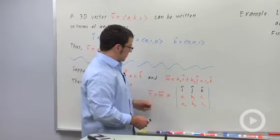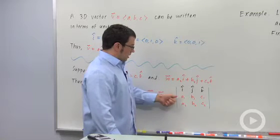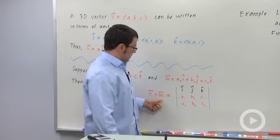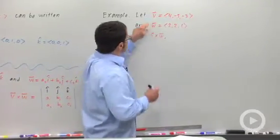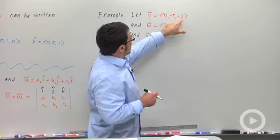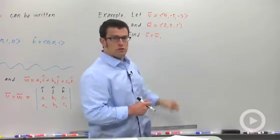So that's really important, the order that you put these two. The first one in the cross product you put in the second row, the second one you put in the third row. Let's try this in an example. So I have two vectors, V equals 4, negative 5, negative 3, W equals 2, 2, 1.